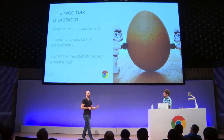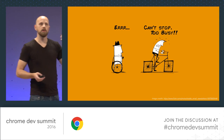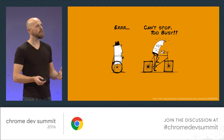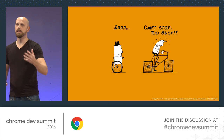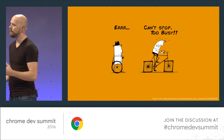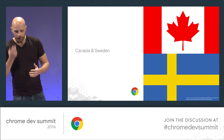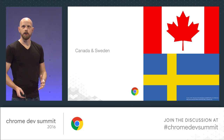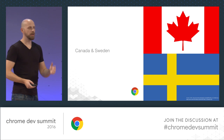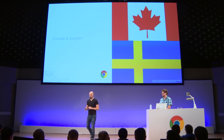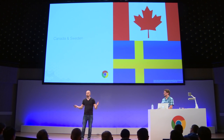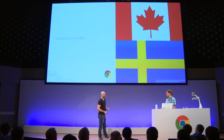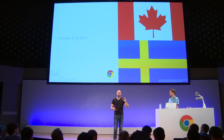We want to make it better for you, so we have one joint web platform. That's why we started the predictability project about six months ago. Maybe you've been working with square wheels so far, but we see this as our responsibility to make sure this is actually good for you. We put our most neutral people working on that — I'm Swedish, Rick is Canadian — so basically you can complain a lot to us and we're going to say we're sorry.